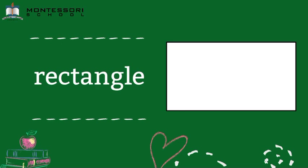The next one is a rectangle. That is a rectangle. Rectangle has four sides. After this, we will see another shape.